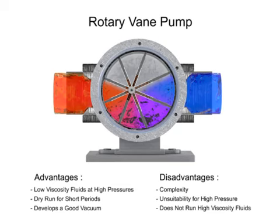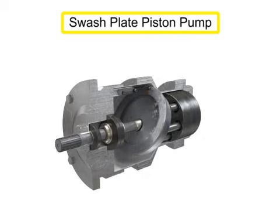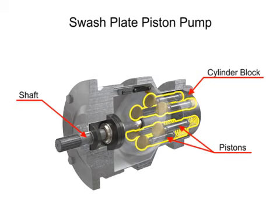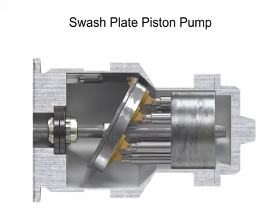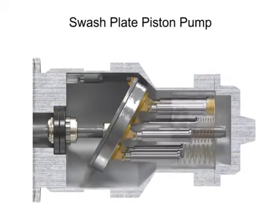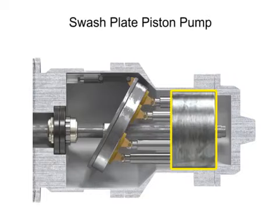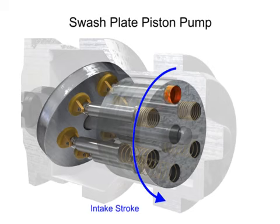Piston pumps come in many different forms. A swash plate is a device used to translate the motion of a rotating shaft into the reciprocating motion of a piston. Swash plate piston pumps have a rotating shaft connected to a cylinder block containing pistons, which are pressed against a stationary swash plate that sits at an angle to the cylinder. As the shaft rotates, the pistons move against the swash plate, causing them to reciprocate within the piston block. The pistons create a vacuum that forces fluid in during half a revolution and expels fluid during the other half.